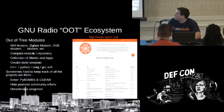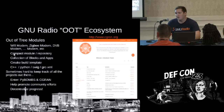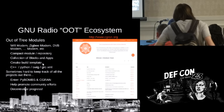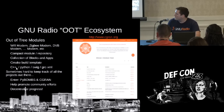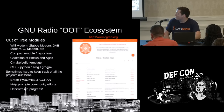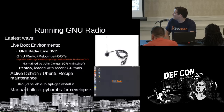GNU Radio provides a template called gr_modtool which helps you build an out-of-tree module very quickly. It sets up a CMake build process, a collection of C modules, Python modules, SWIG wrappers for your C modules, and the GRC XML file which makes things show up in the graphical companion tool.